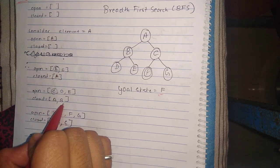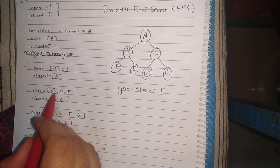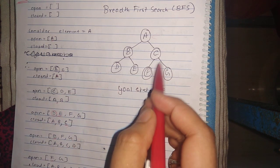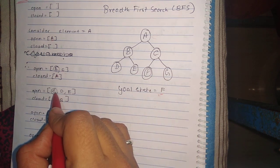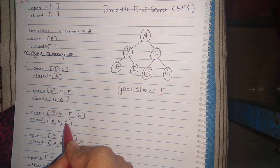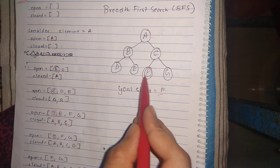Now the next element is C. C is also not the goal state, so we'll place C into the closed array. What are the children of C? F and G.